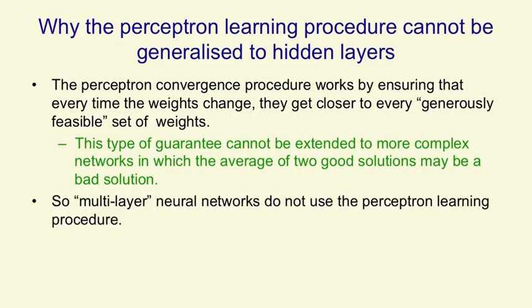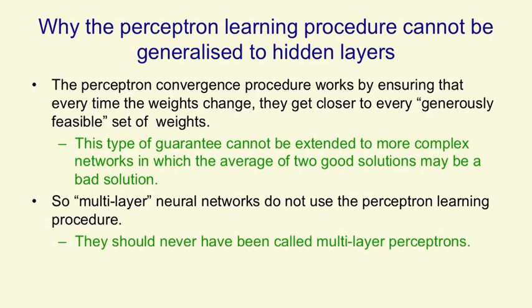For multilayer neural networks, we don't use the perceptron learning procedure. To prove that something is improving, we don't use the same kind of proof at all. They should never have been called multilayer perceptrons. It's partly my fault, and I'm sorry.